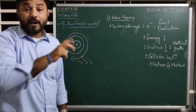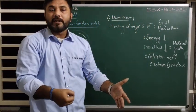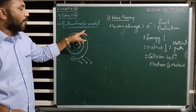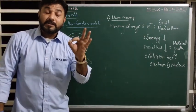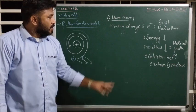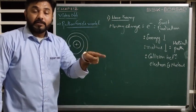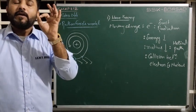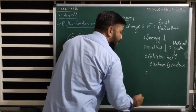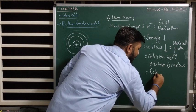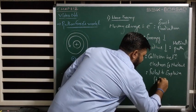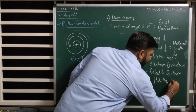If the electron collides with the nucleus, the atom becomes unstable. This means Rutherford's atomic model failed to explain the stability of an atom. So this is the first point why Rutherford's atomic model failed — it failed to explain the stability of an atom.